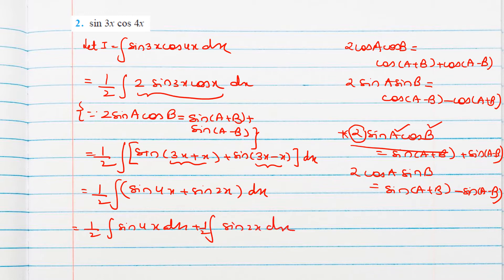The integral of sin4x is −cos4x, so with the existing factor of 2 in the denominator we get −cos4x / 8. For sin2x the integral gives −cos2x, and with the factor of 2 already present we get −cos2x / 4, plus C.